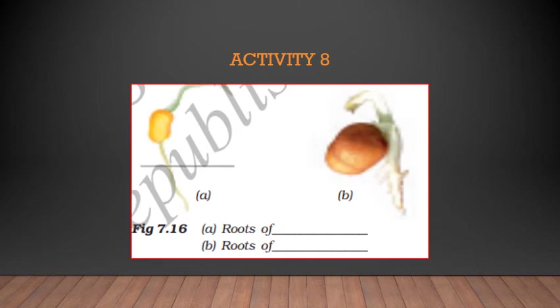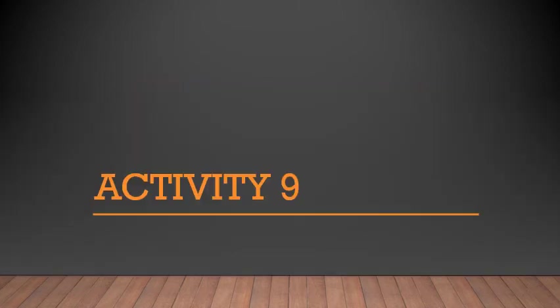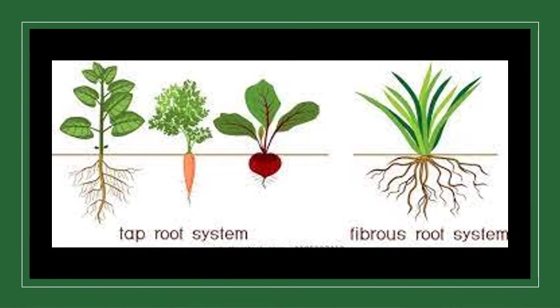In what way are the roots of gram and maize similar, and in what way are they different? There seem to be two different types of roots. We have two different types of roots — tap roots and fibrous roots. In Activity 9, go to an open ground where many wild plants are growing, dig out a few, wash the soil off the roots and observe them. In the picture you can see the two kinds: the tap root system — like beetroot and carrot — has a main central root with lateral roots coming from it. The fibrous root system has roots that start from the base of the plant and all look similar.